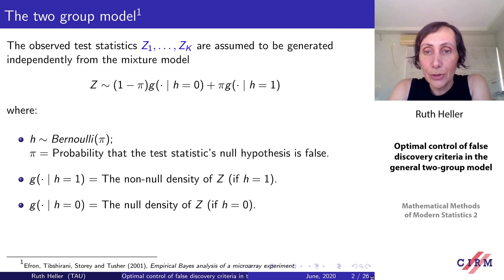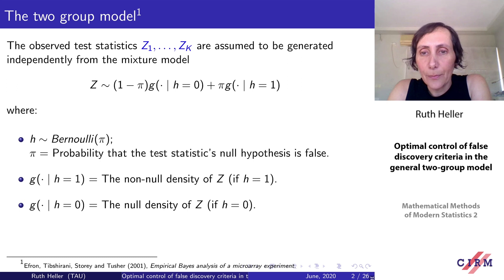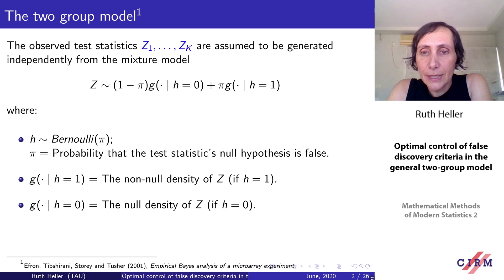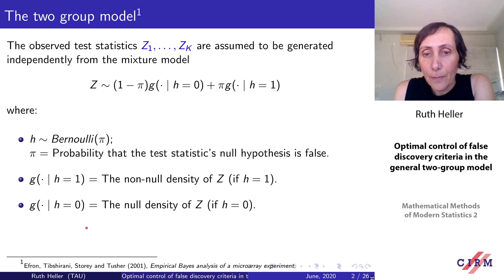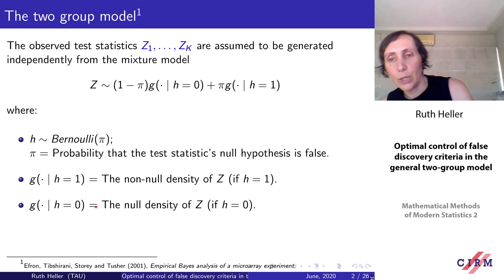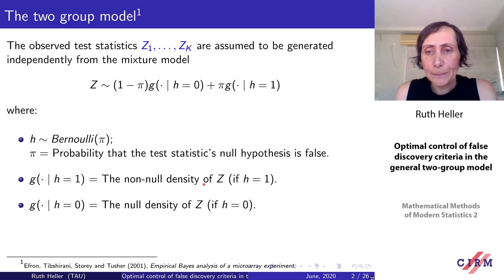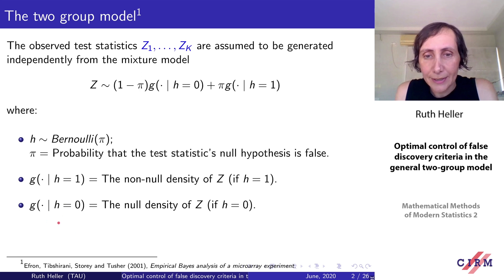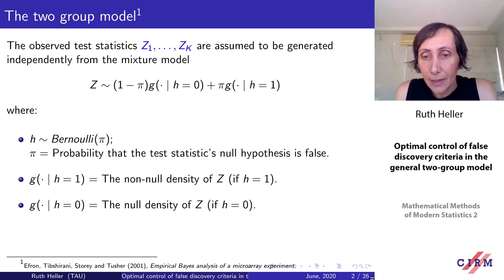The two-group model was introduced in 2001 by Efron et al. You have a probability pi of being from the non-null hypothesis, and given that you are from the non-null, you observe a test statistic from a non-null density, and probability one minus pi of being from the null density. The test statistics are independently drawn from this two-group model.